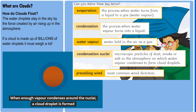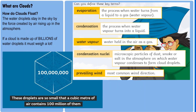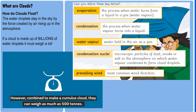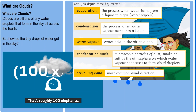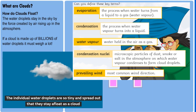When enough water vapor has condensed onto the surface of a particle, tiny cloud droplets are formed. Now these are typically very light, but because there are so many of them together, in total they can weigh hundreds of tons. Clouds float because firstly the particles are very widely spread, and secondly because the warm air that is still rising underneath the clouds keeps them afloat.